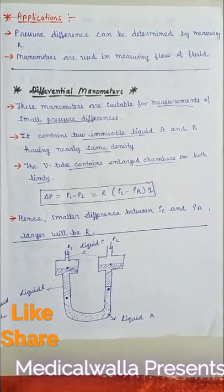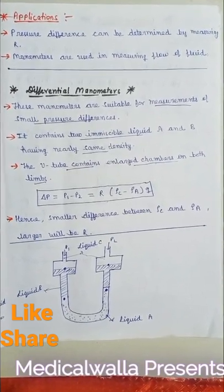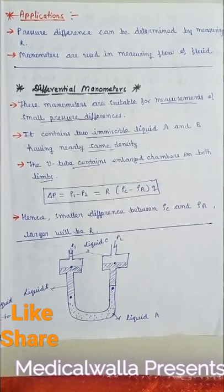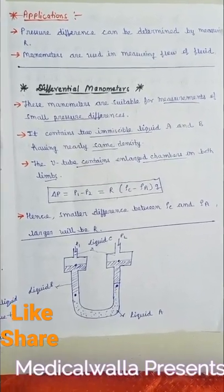Differential manometer: These manometers are suitable for the measurement of small pressure differences. It contains two immiscible liquids A and B having nearly the same density. The U tube contains enlarged chambers on both limbs.